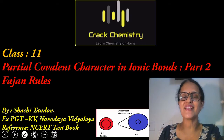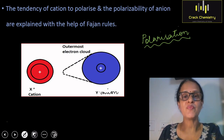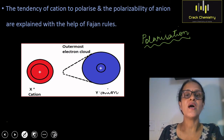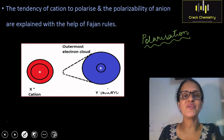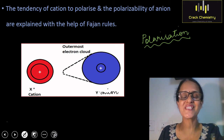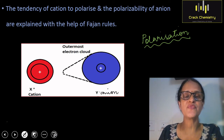So now come with me and let's Crack Chemistry. In Part 1 of this video, I explained that an ionic bond which is formed by the loss and gain of electrons between a metal and a non-metal is not 100% ionic. It has some covalent character.